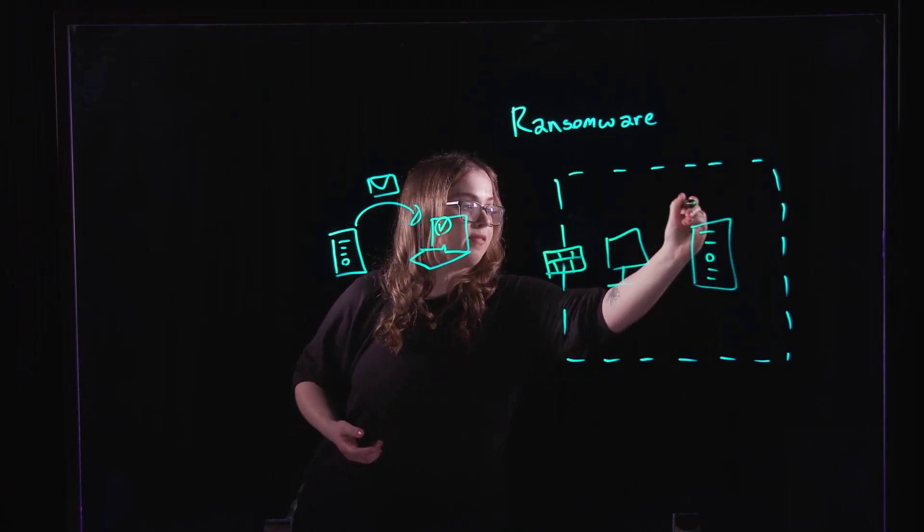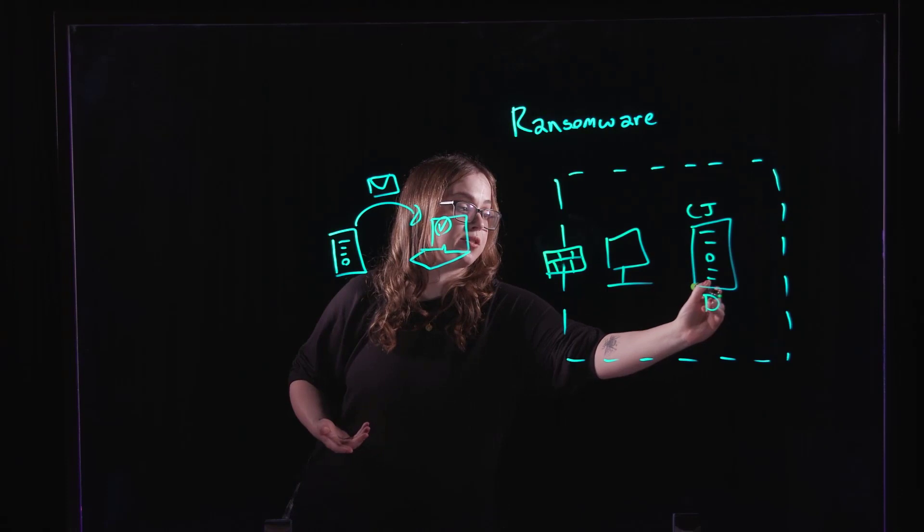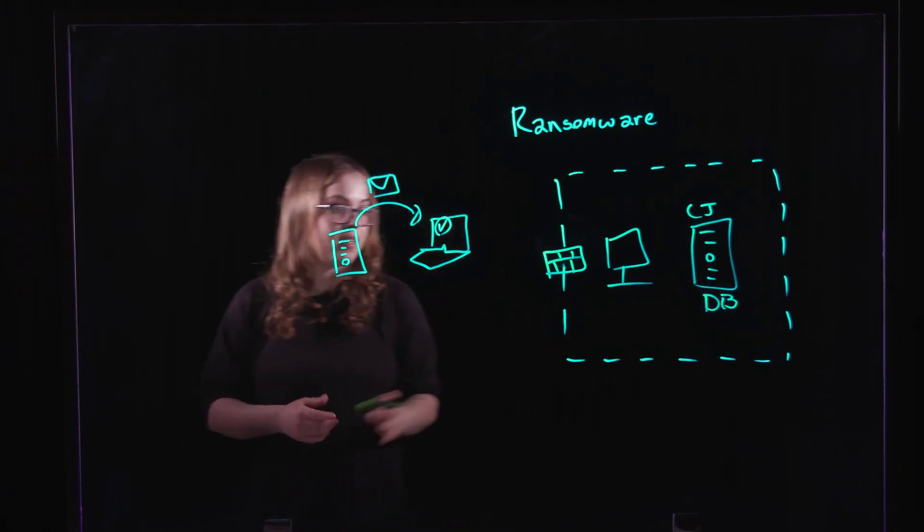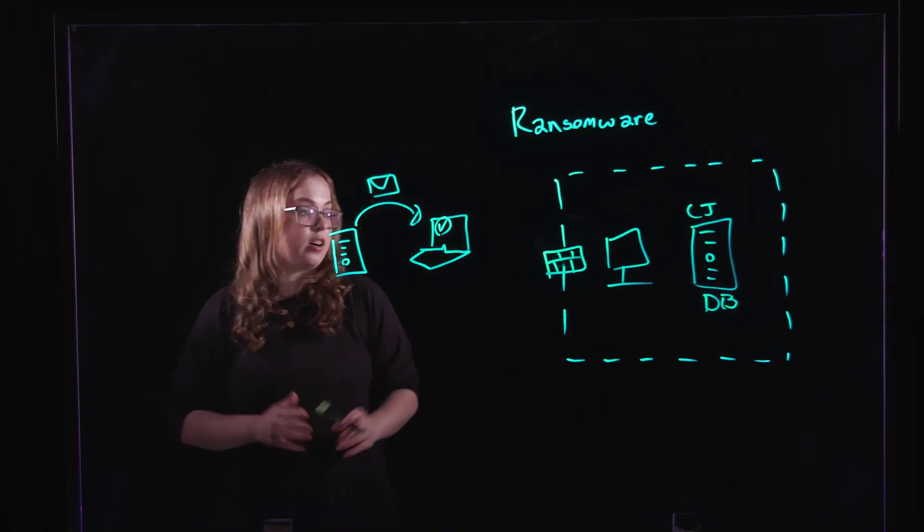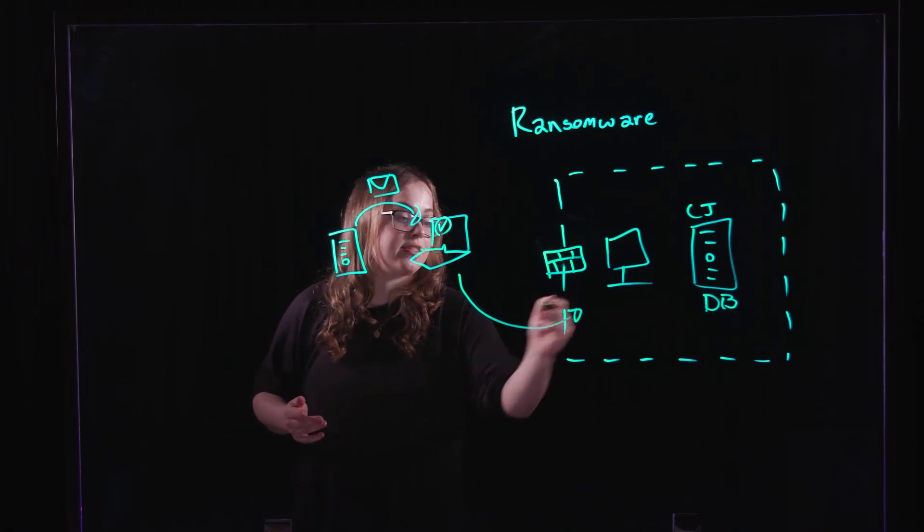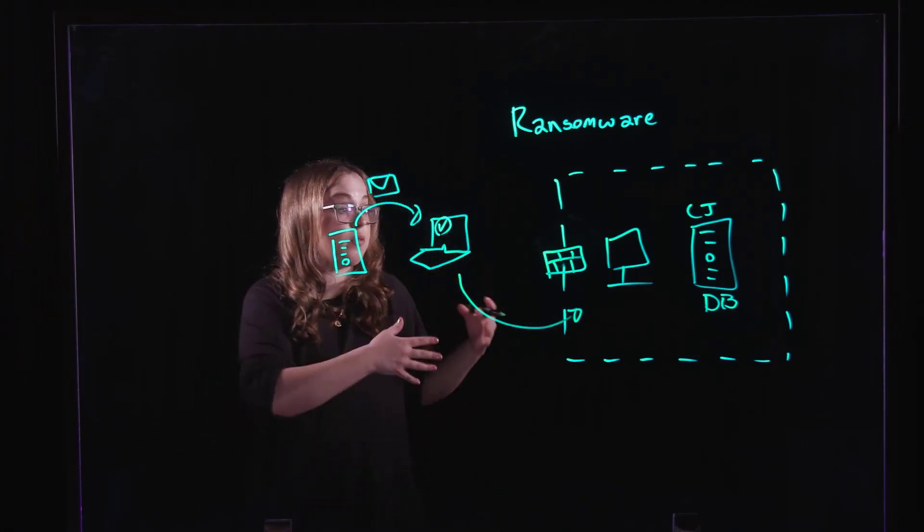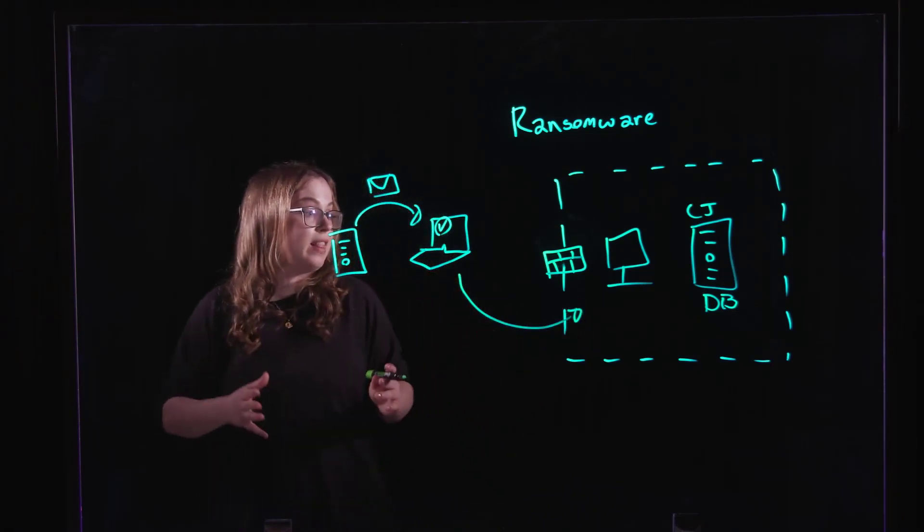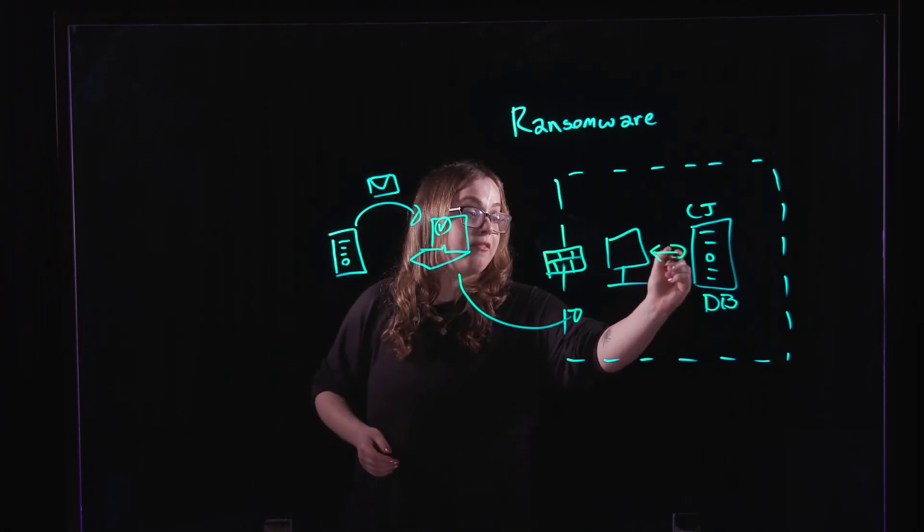Something like the crown jewels of the environment. This could be a database or something else in this case. Even if the attacker has that initial access into the environment and can see all of our network nodes, we can prevent them from moving laterally in that environment.